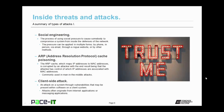Then there is social engineering. This is the process of using social pressure to cause somebody to compromise a system from inside the defenses of the network. The social pressure can be applied in multiple forms. It can come by phone, it can be in person, it can arrive via email, or even through a rogue website, or by any other method that applies social pressure on inside users to compromise the system.